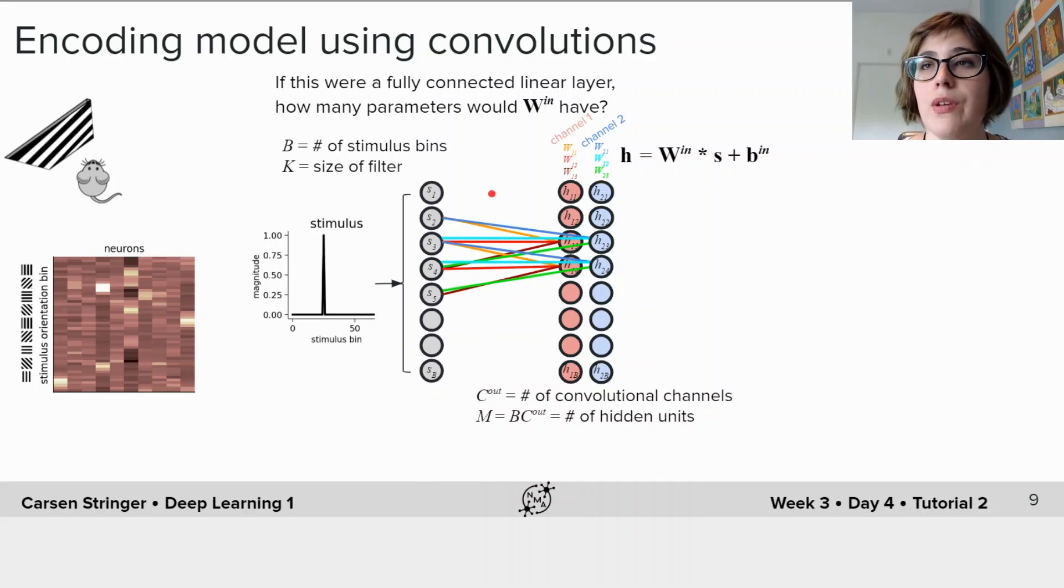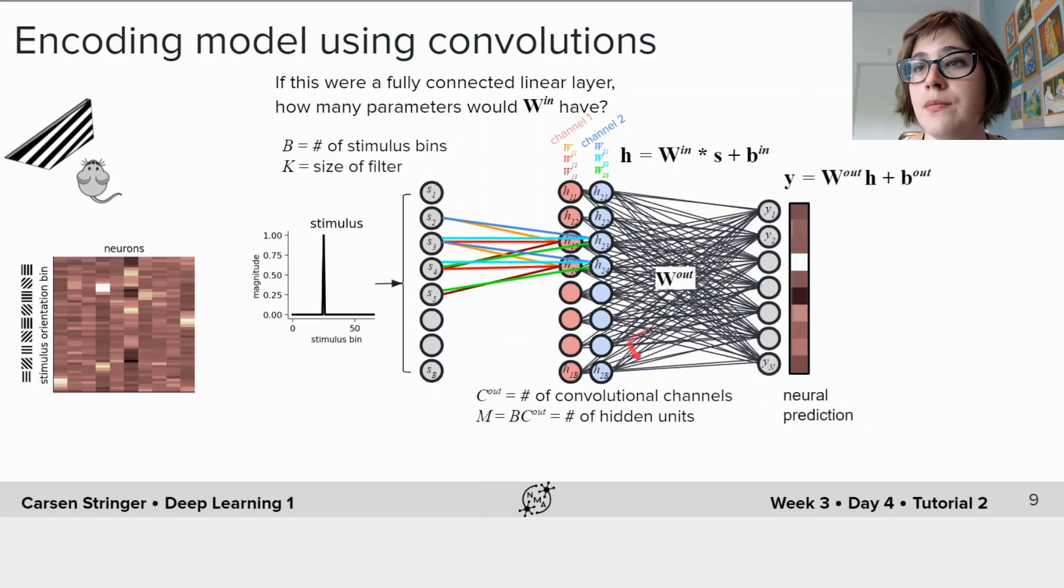So now we found that using these convolutional models allows us to reduce the number of weights we need. Let's use these convolutional models to predict our neural responses. So we need to add to this convolutional layer a fully connected layer which we'll call the weights of this layer W_out, and y which is our neural prediction will be W_out times h plus b_out.